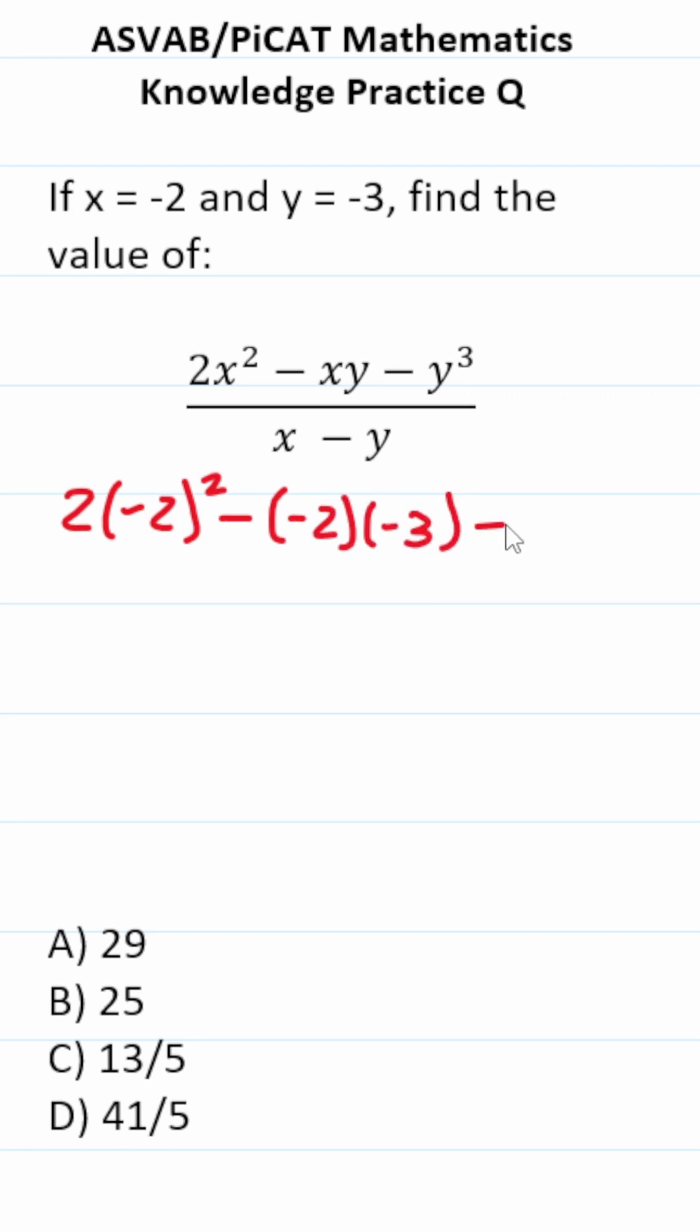And then this is minus negative 3 to the third all over negative 2 minus negative 3. Alright, let's work on simplifying this.